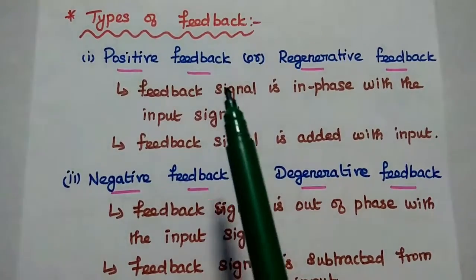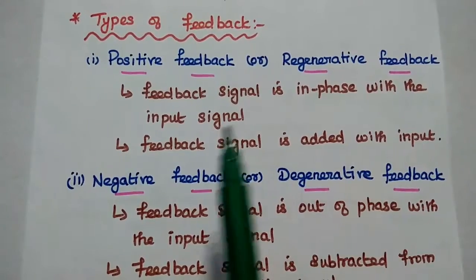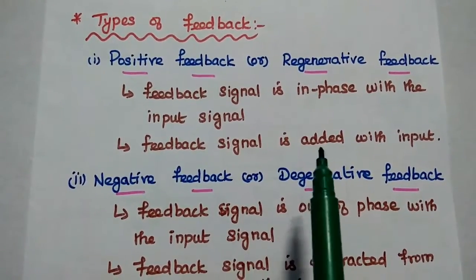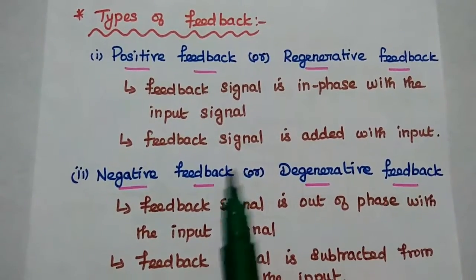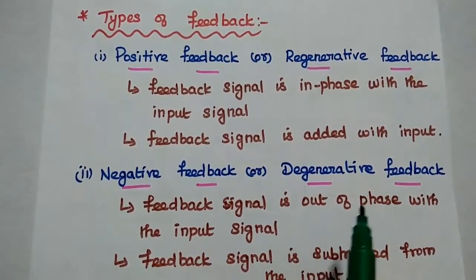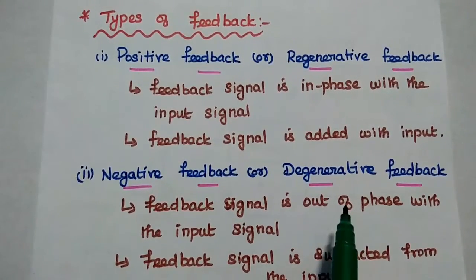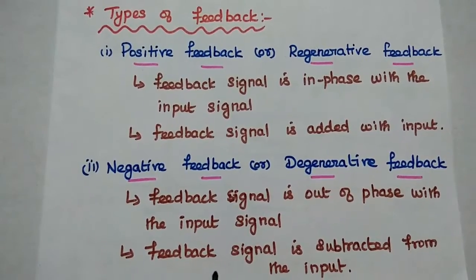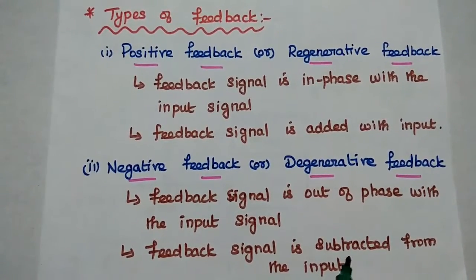In positive feedback, the feedback signal is in-phase with the input signal, so the feedback signal is added with the input to get the desired output. In negative feedback, the feedback signal is out-of-phase with the input signal, so the feedback signal is subtracted from the input signal.